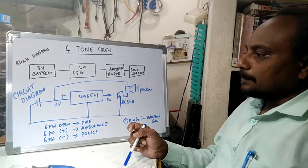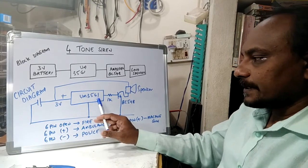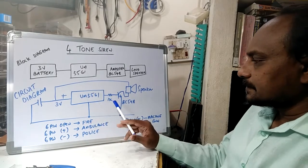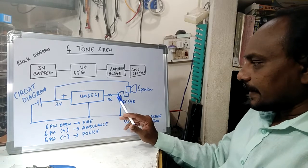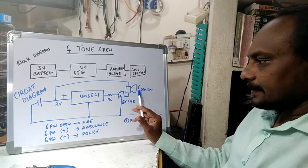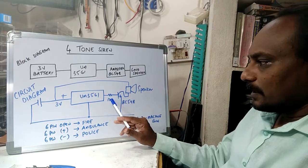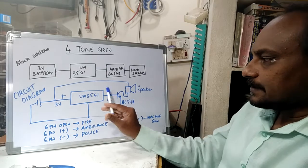This circuit can be designed by using siren IC UM3561. For this IC, you have to connect few components, those are a transistor to drive the output for the speaker and a resistor to limit the current, and 3 volt supply will be useful to drive this IC.